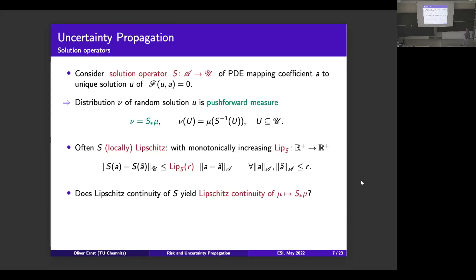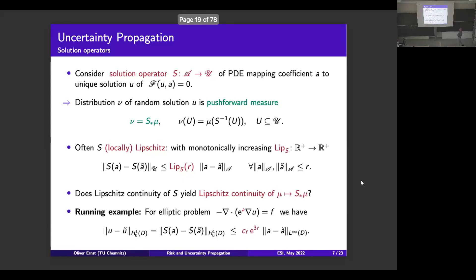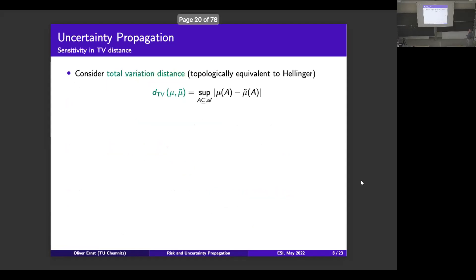The question is: if you have Lipschitz continuity of the solution map, does this translate to Lipschitz continuity in the transport of the measures? Coming back to our running example — the elliptic diffusion problem — if you have two solutions u and ũ from two different diffusion coefficients a and ã, standard elliptic a priori estimates give a bound that depends on the right-hand side, and you can easily get a bound that's exponential in the radius, with a and ã measured in the L^∞ norm.